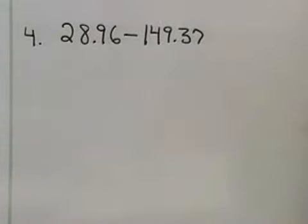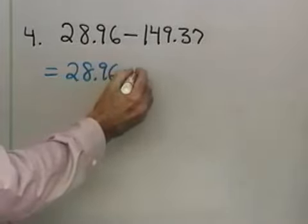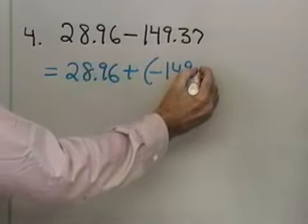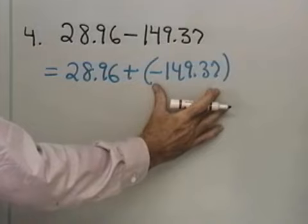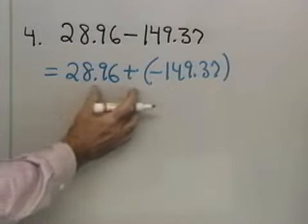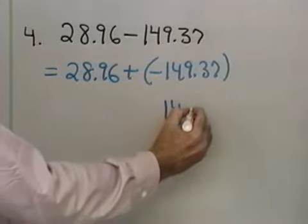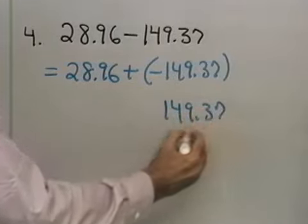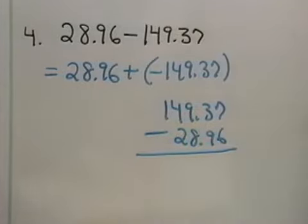This problem is for the pre-algebra students. We have 28.96 minus 149.37. So, I'm going to think, in terms of addition, that this is 28.96 plus a negative 149.37. Now, you know, to do this kind of addition with positive and negative numbers, I have to subtract the number with smaller absolute value from the number with the larger absolute value, because the signs are different. So, I have this 149.37. I need to subtract from that 28.96, just using normal subtraction.